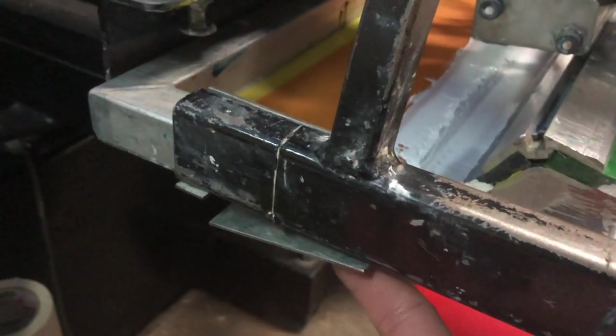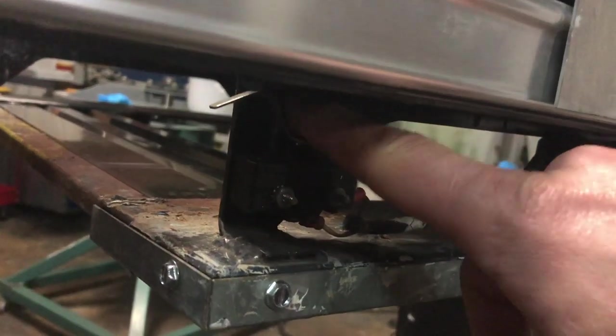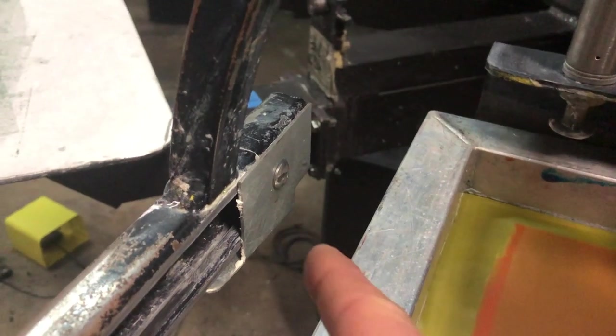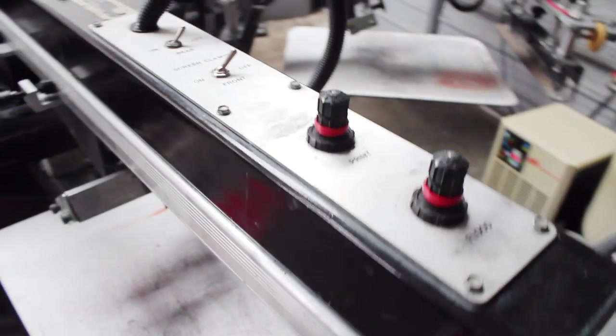To adjust the length of the stroke on your flashback, you have to adjust this little lever here that essentially triggers this switch right here on your flashback. You adjust that by loosening up that screw and you can slide it up and down this rail.